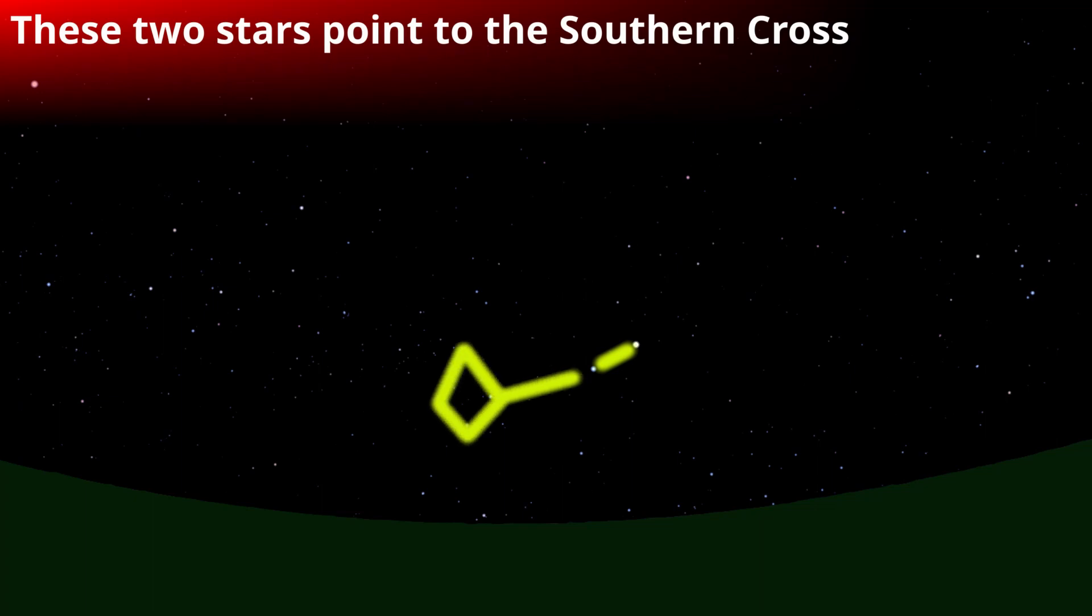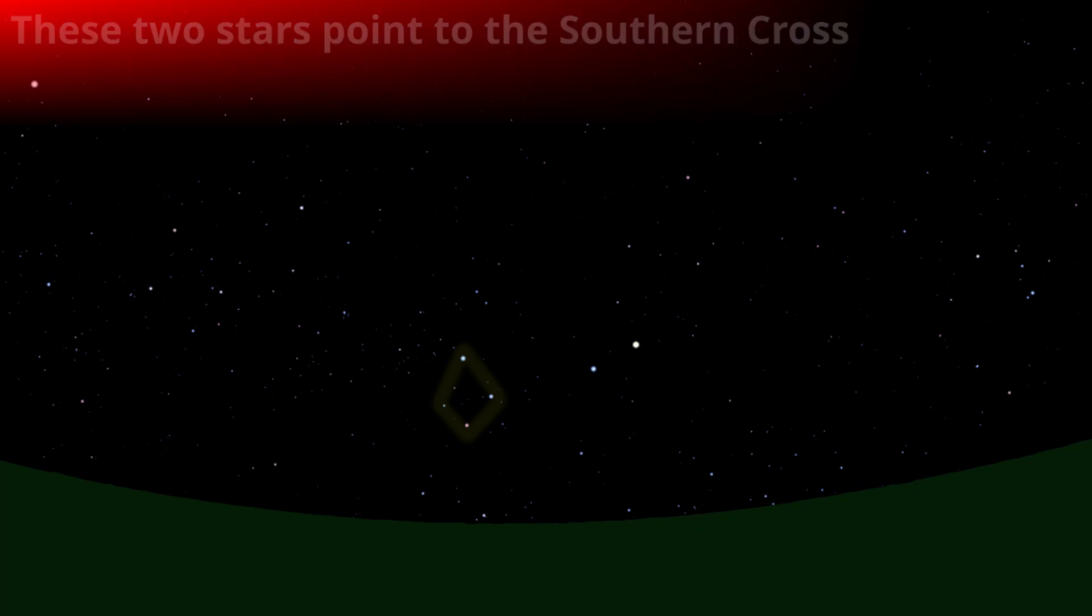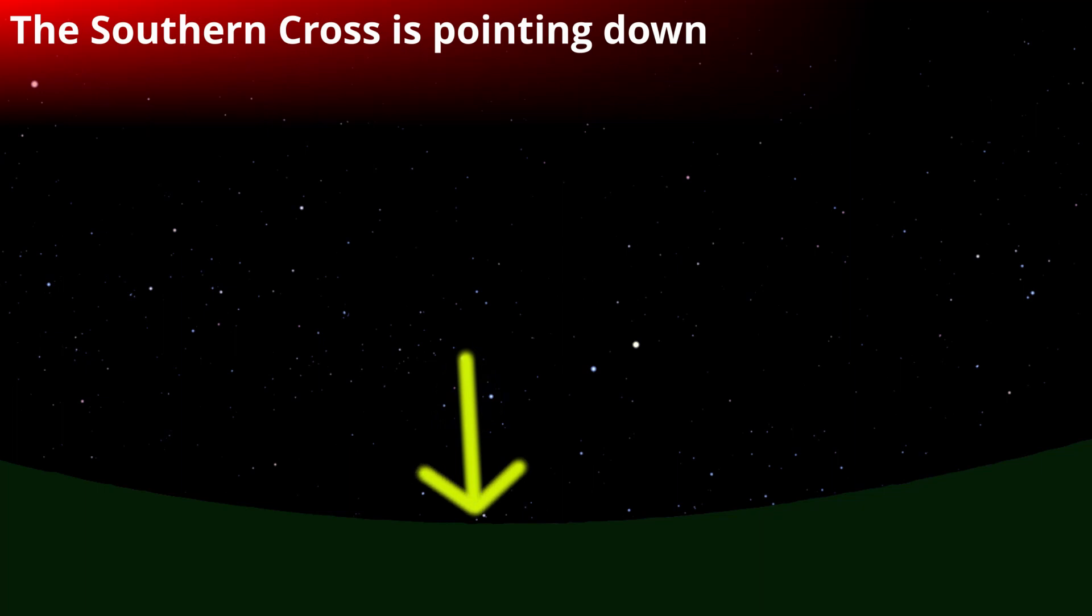Yeah, so once you found the southern cross which is an awesome marker and of course it's on our flag and a few other flags. These two stars they point to the southern cross. But it's a bit tricky because the southern cross is at different times of the night in different parts of the sky.